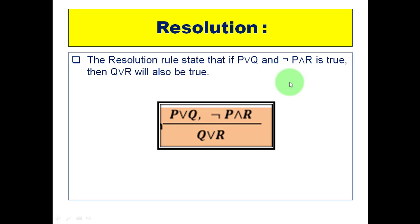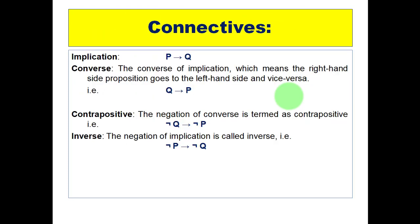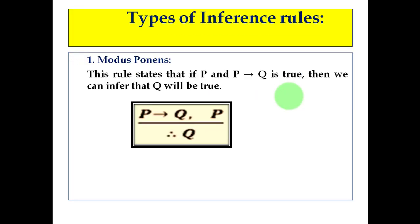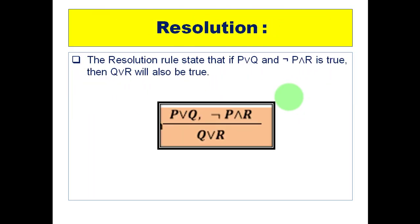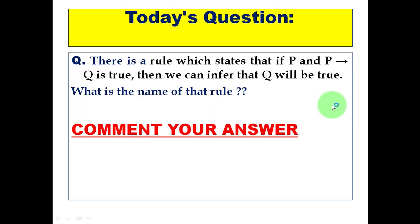We have now covered all the important inference rules. Today's question: there is a rule which states that if P is true and P implies Q is true, then we can infer that Q will also be true — what is the name of this rule? Is it modus tollens, modus ponens, simplification, or resolution? Comment your answer below.